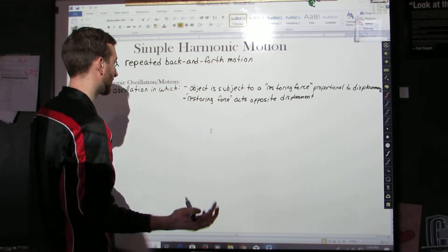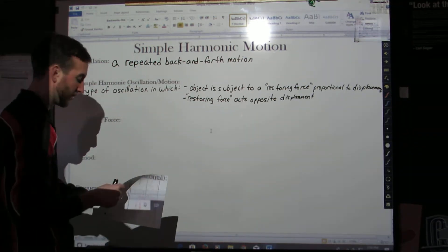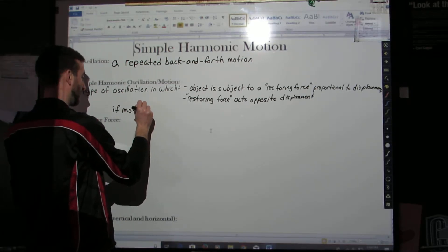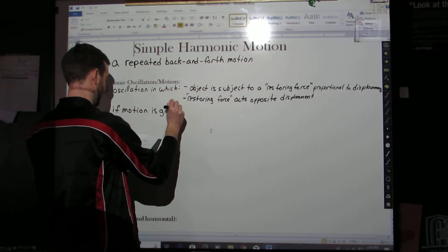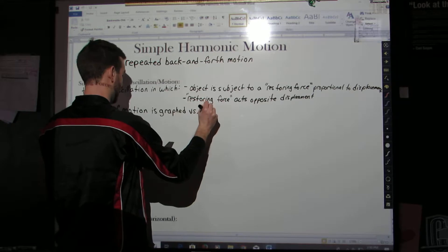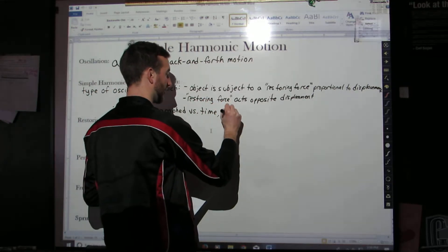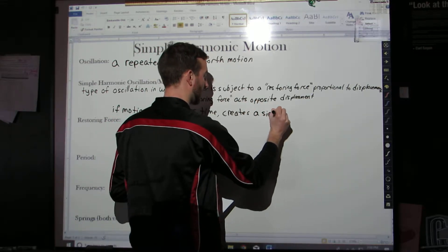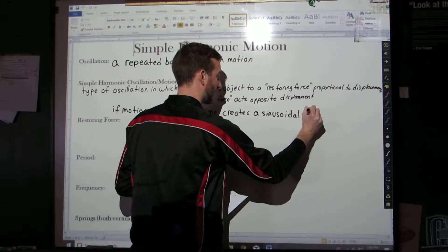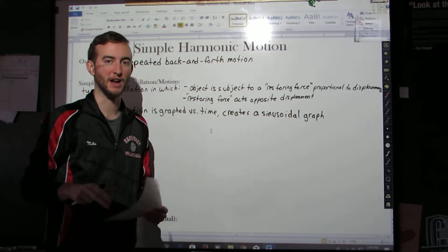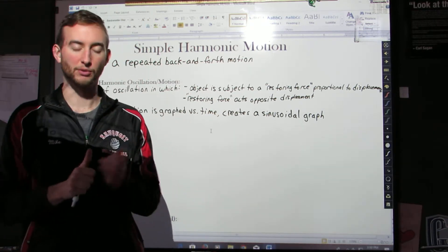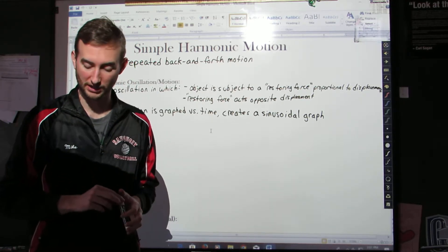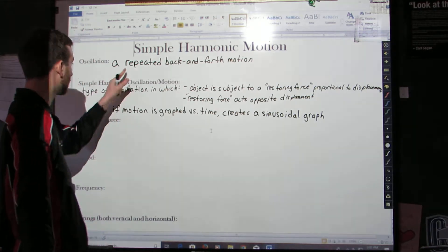Simple harmonic motion is a type of oscillation in which these two things happen. The object is subject to what is known as a restoring force. That restoring force is proportional to the object's displacement. So first characteristic: an object is subject to a restoring force that's proportional to the object's displacement. And secondly, this restoring force acts opposite the displacement.